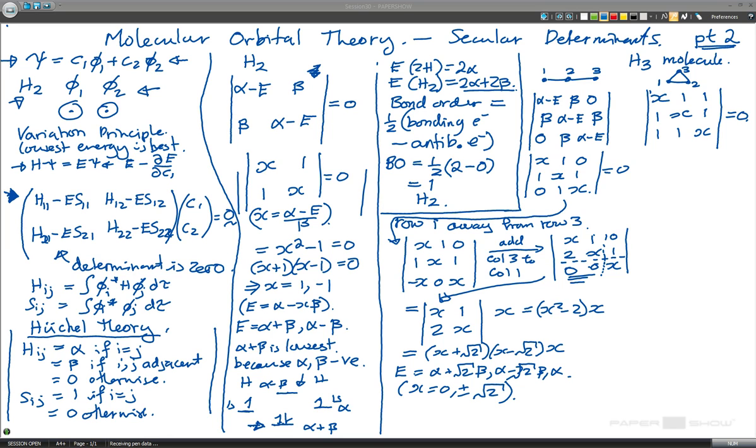Okay, let's have a quick look at our triangular molecule. So here we're again going to do row and column operations but this time we're going to take row 1 away from row 2 and row 3. So what we get, top row stays the same, but then we get 1 minus X here and X minus 1 and 0 and 1 minus X here and 0 and X minus 1 here.